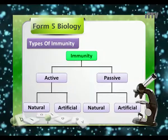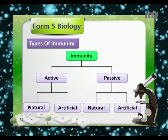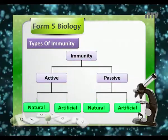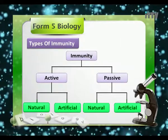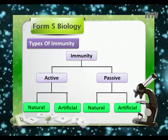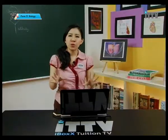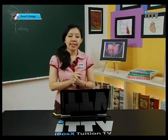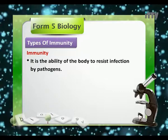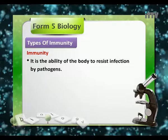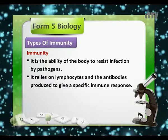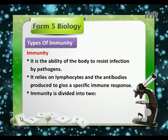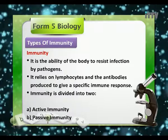Looking at this flowchart showing different types of immunity: immunity is divided into active and passive immunity. To attain either active or passive immunity, there are both natural and artificial ways of acquiring immunity. Immunity is the ability of the body to resist infection by pathogens, and it relies on lymphocytes and the antibodies produced to give a specific immune response.